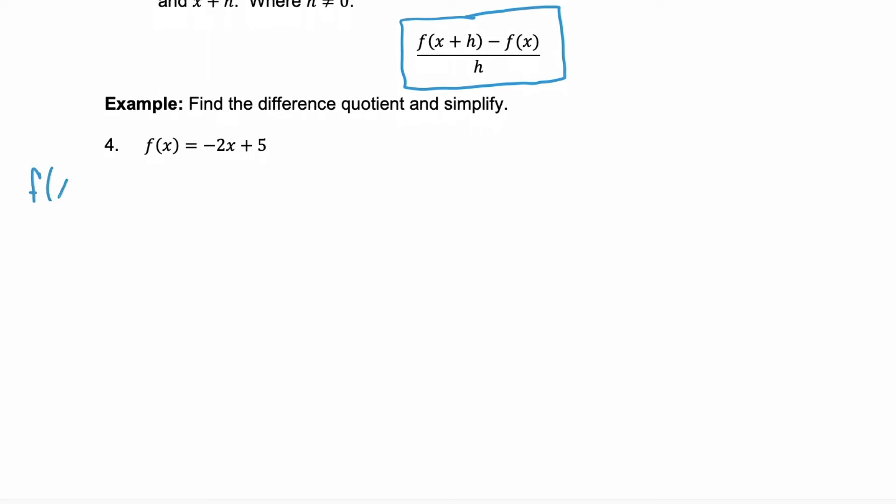So first you want to find f(x + h). Remember this is saying substitute x plus h into the given function wherever you have an x. That would give us negative two times (x + h) plus five. Distribute that negative two. We have negative 2x minus 2h plus 5. Simplify this. This is as simplified as it can be but if you have a function where you can simplify, simplify.